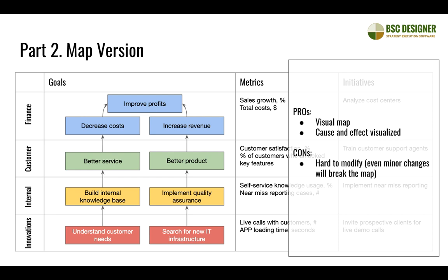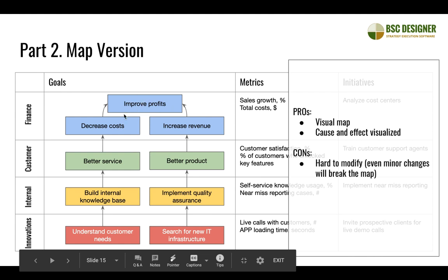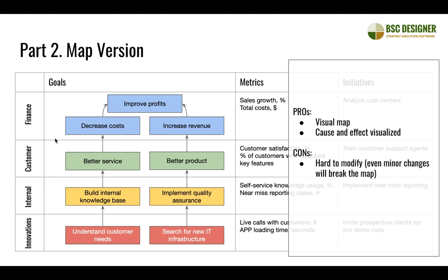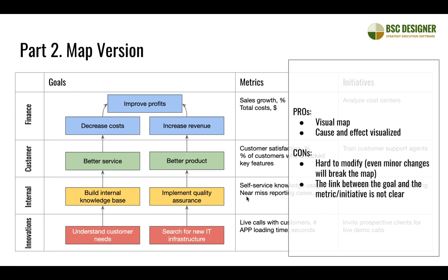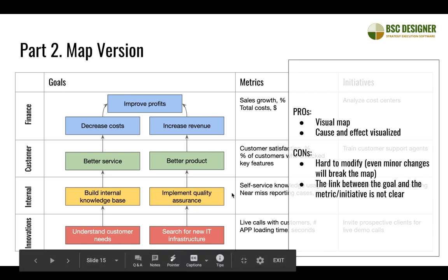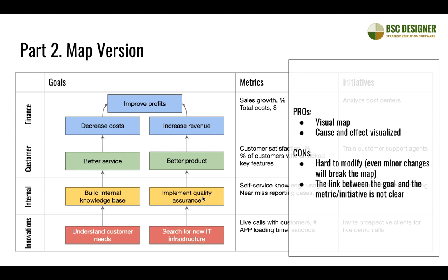There are still some cons. This map is hard to modify — when inserting a new goal I had to resize rows, move columns, and rearrange elements. Imagine needing more modifications at scale. Also, while goals and their connections are clear, it's not obvious which metrics correspond to which goal. For example, a metric like 'number of cases reported' could appear to belong to multiple goals, and on a small scale you can deduce it, but on a larger scale it becomes very unclear.